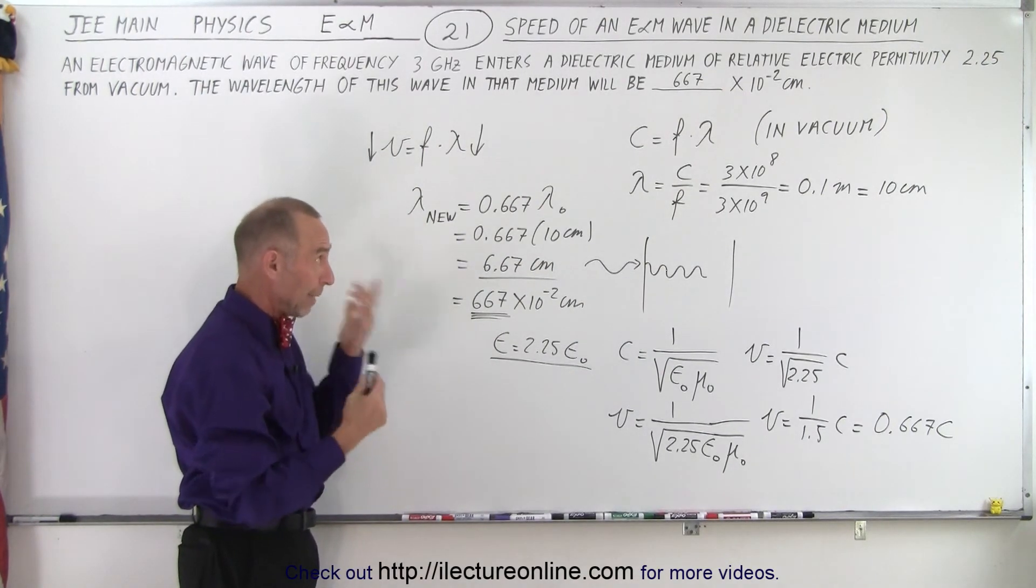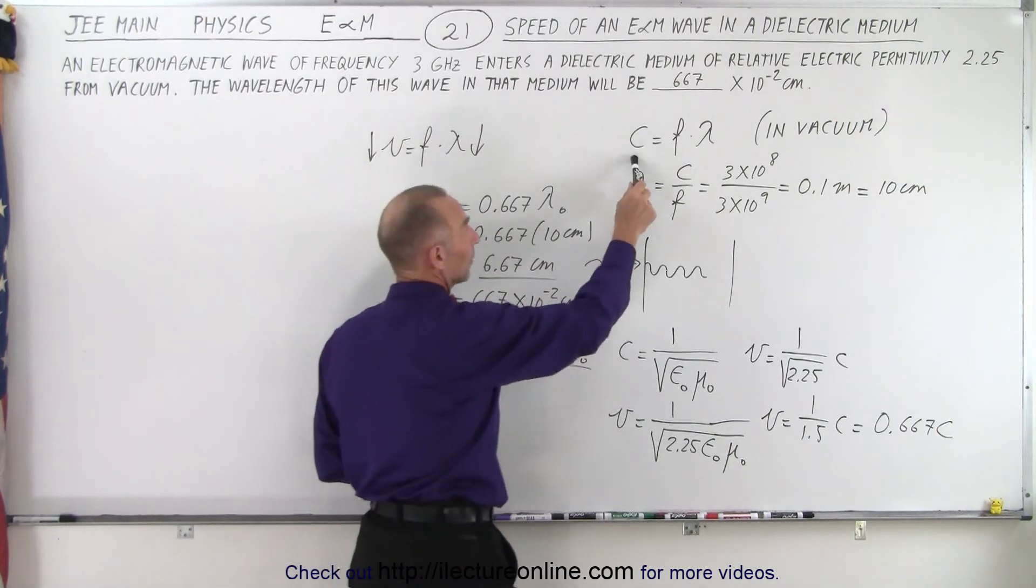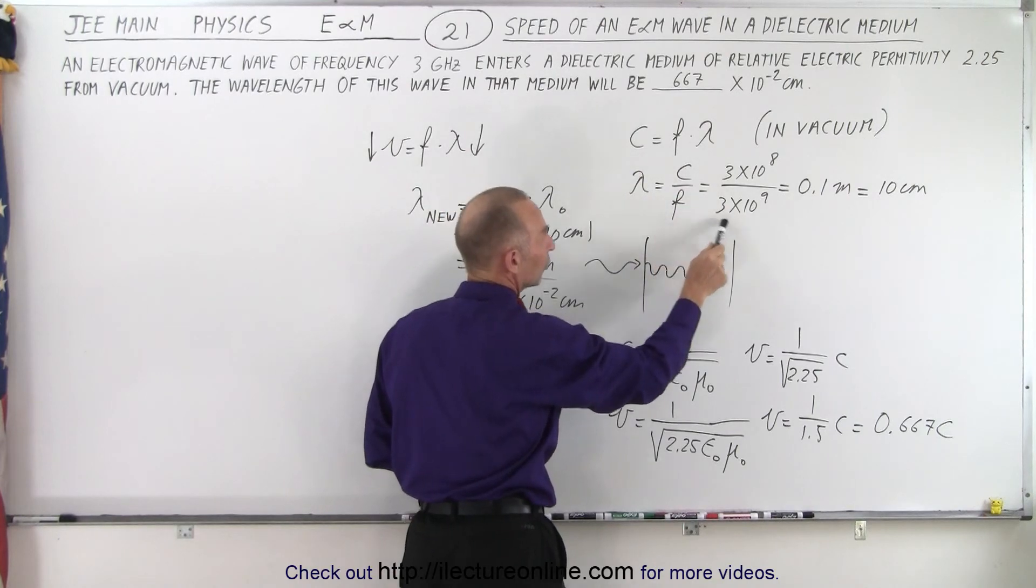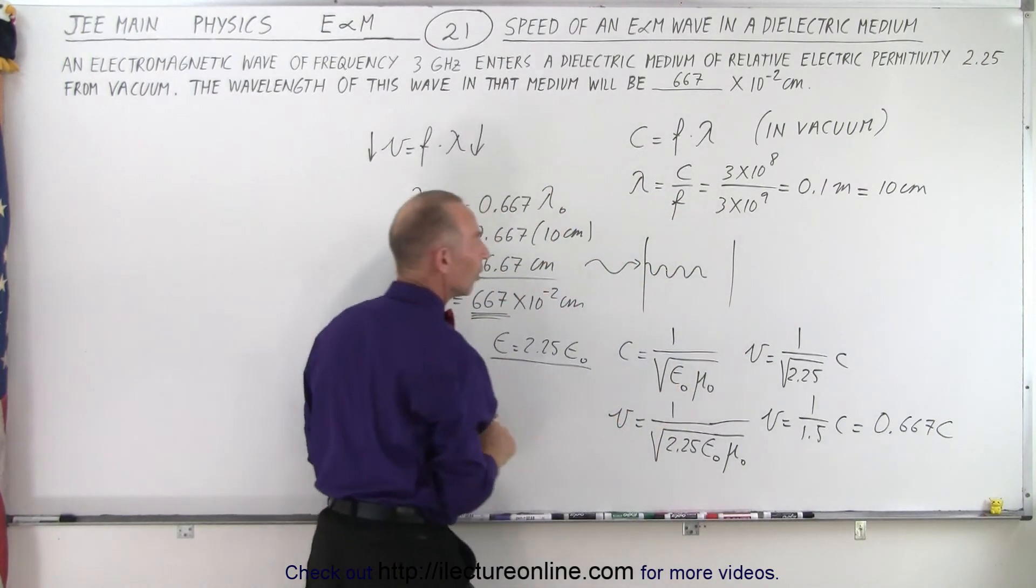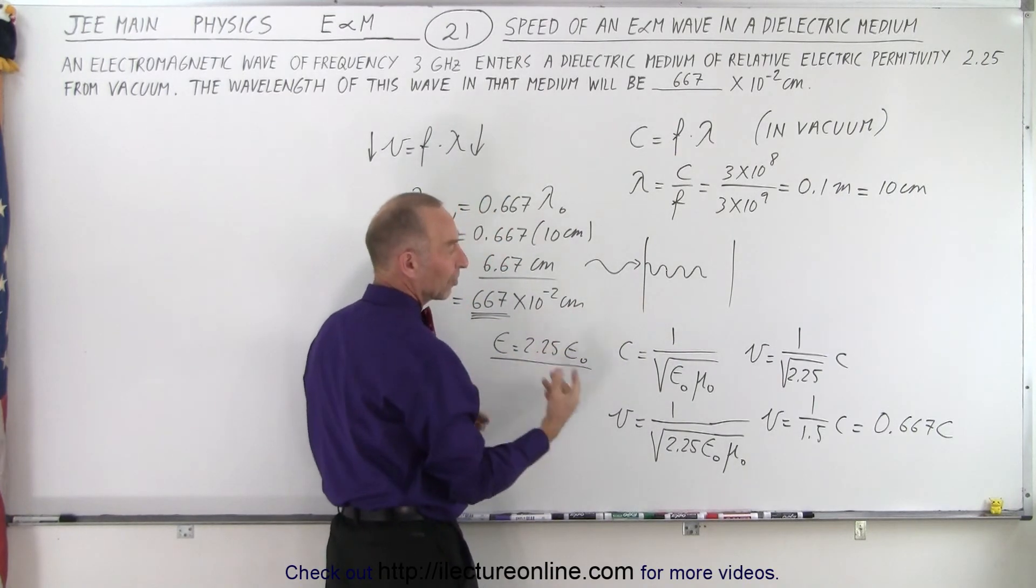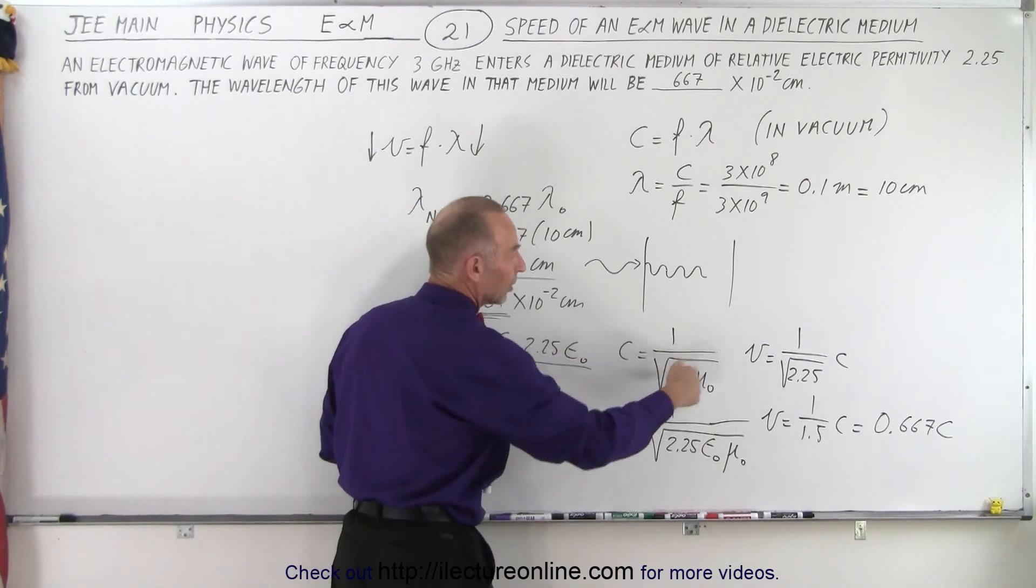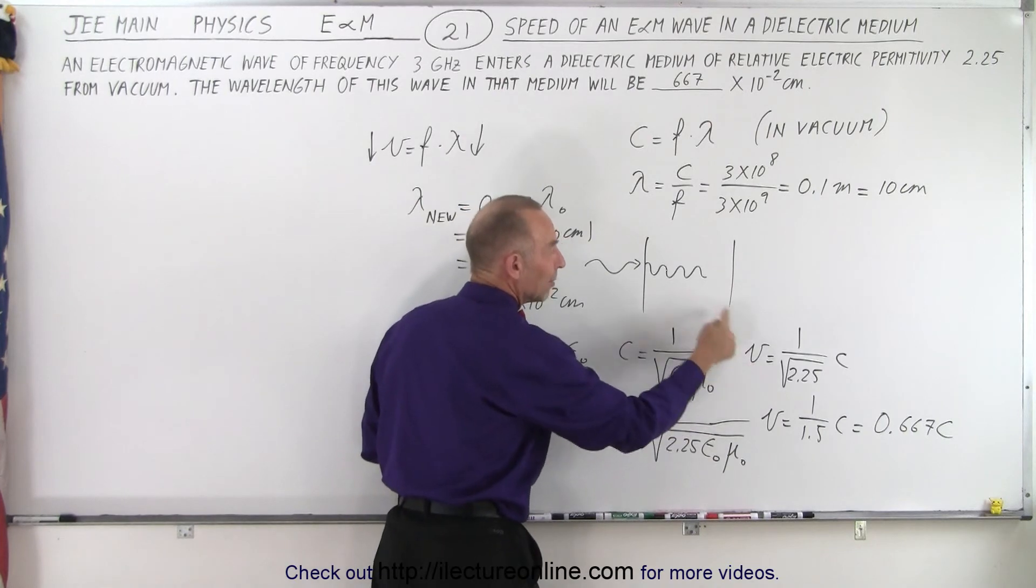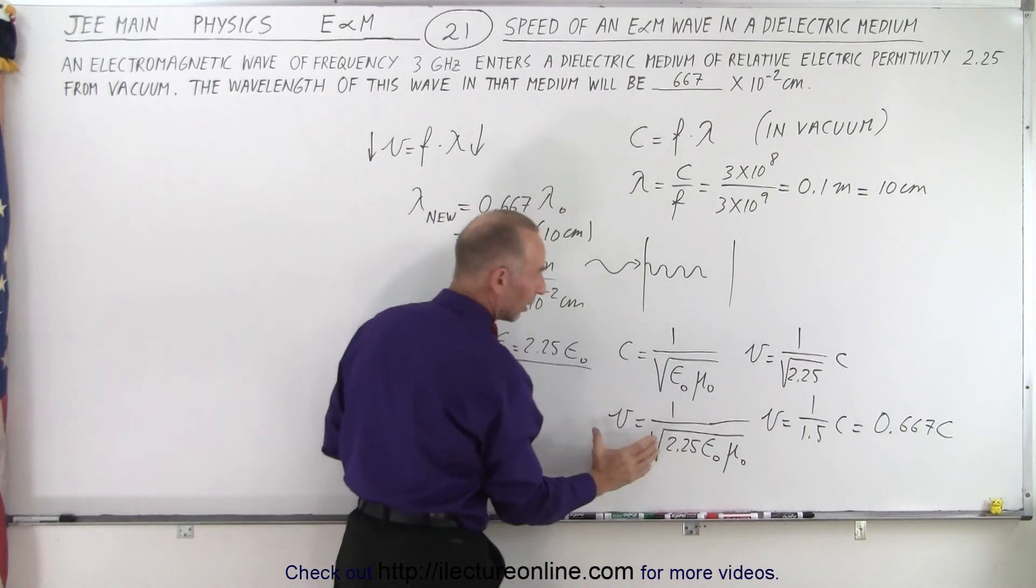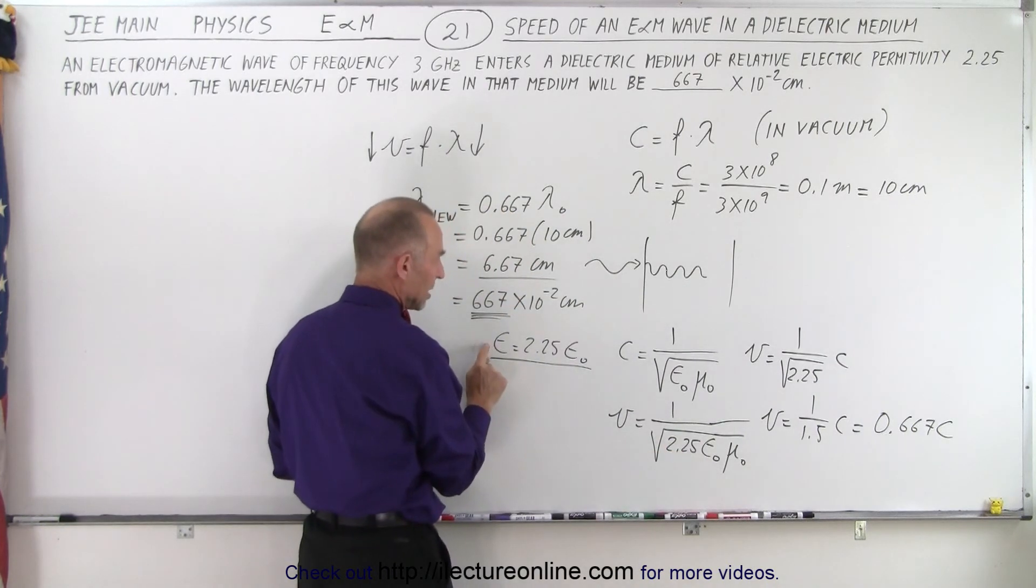Again the background information is that we know that the speed of light equals frequency times wavelength. So the wavelength is speed of light divided by the frequency which can be calculated to be 10 centimeters. We then realize the answer will be less than 10 centimeters. How much less? Well we know the speed of light is equal to this and therefore the velocity in the medium will be 1 over 2.25 times this because we realize that the new permittivity in the dielectric is 2.25.